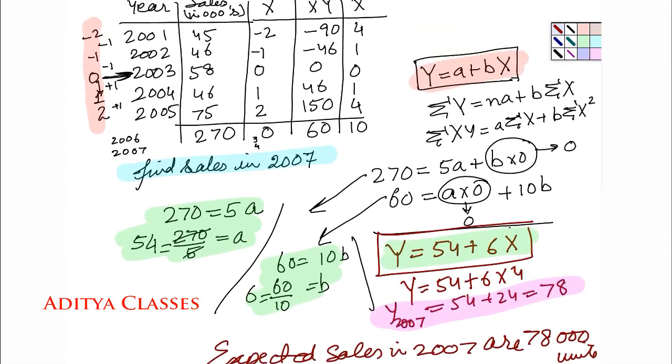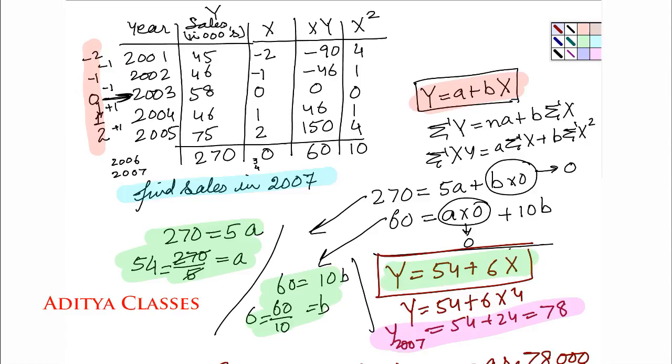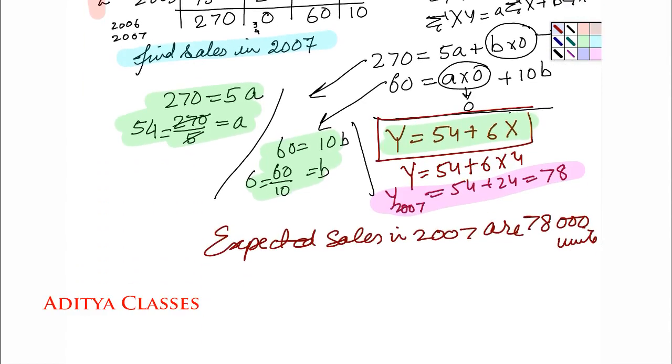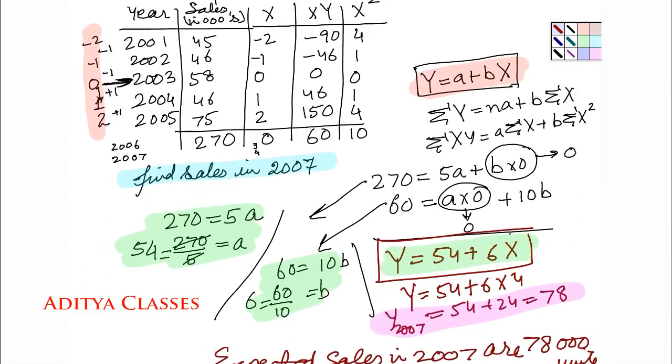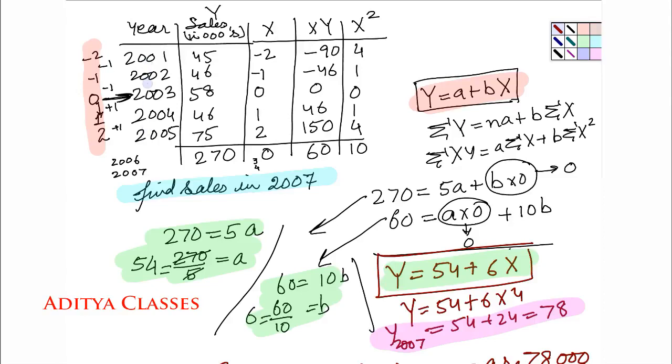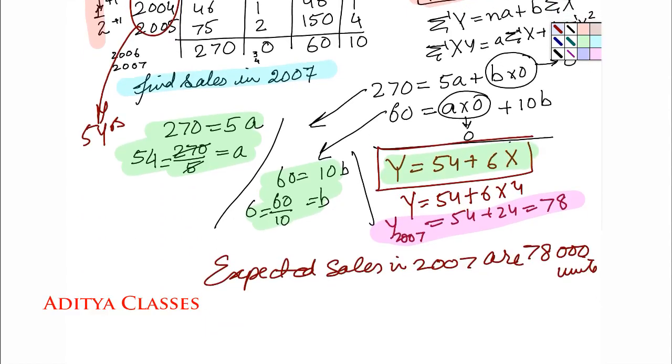In our next video, we will take a scenario where we will be having even number of years. The important thing to watch out here was that we were having odd number of years: 1, 2, 3, 4, and 5, making data for 5 years. Next time when we will meet, we will try to find out regression for scenarios where we have even number of years. Till then, bye-bye. Thanks.